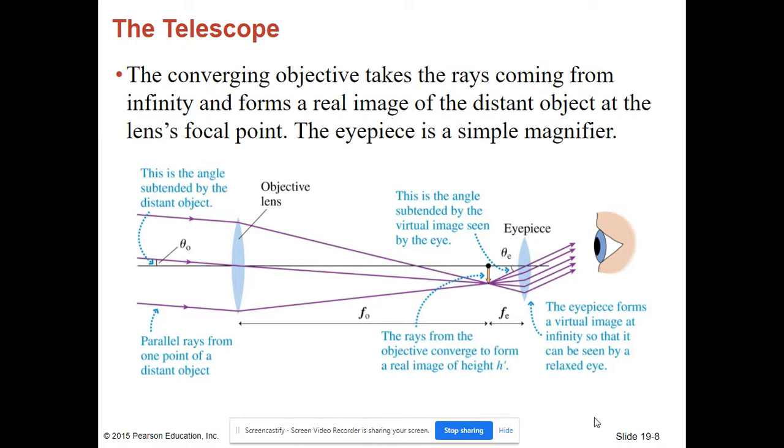The converging objective takes the rays from infinity and forms a real image of the distant object at the lens focal point. The eyepiece is a simple magnifier.